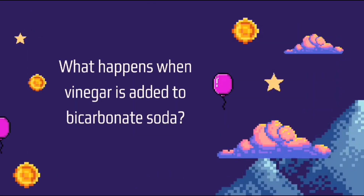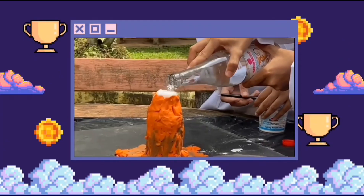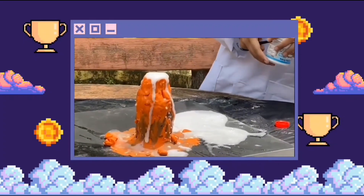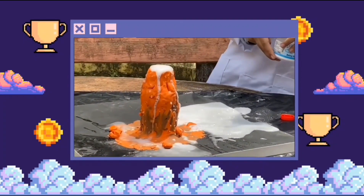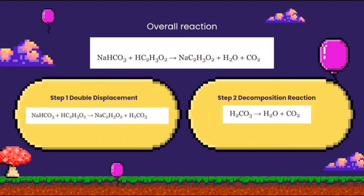Observation — chemical change. What happens when vinegar is added to bicarbonate soda? The overall chemical reaction is: one mole of solid sodium bicarbonate reacts with one mole of liquid acetic acid to produce one mole each of carbon dioxide gas, liquid water, sodium ions, and acetate ions. The chemical reaction is divided into two steps. The first reaction is a double displacement reaction; secondly, a decomposition reaction. In step one, acetic acid in vinegar reacts with sodium bicarbonate to form sodium acetate and carbonic acid. The carbonic acid is unstable, and thus in step two, it undergoes a decomposition reaction to produce carbon dioxide gas.